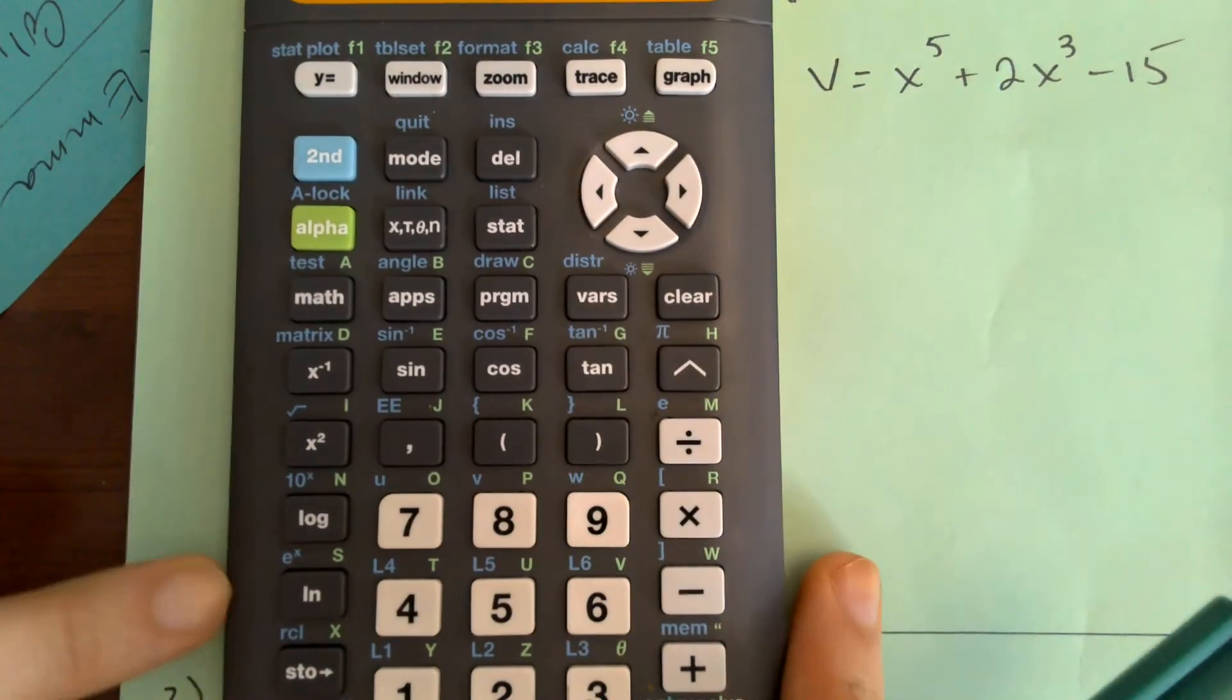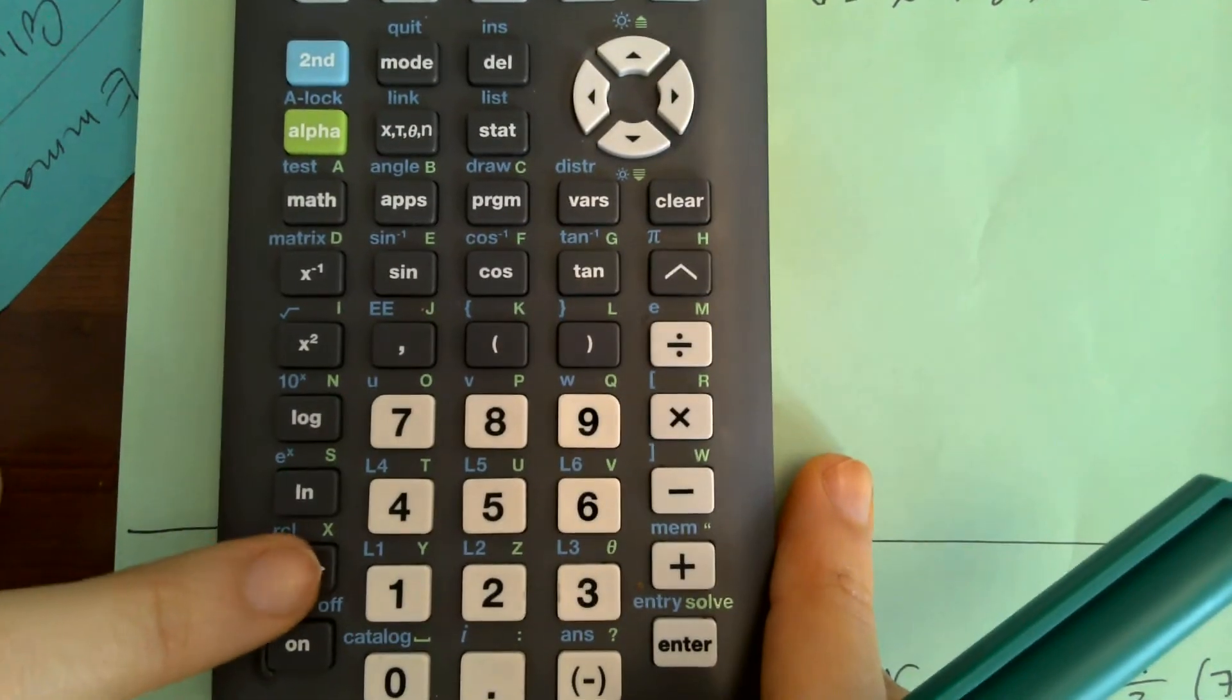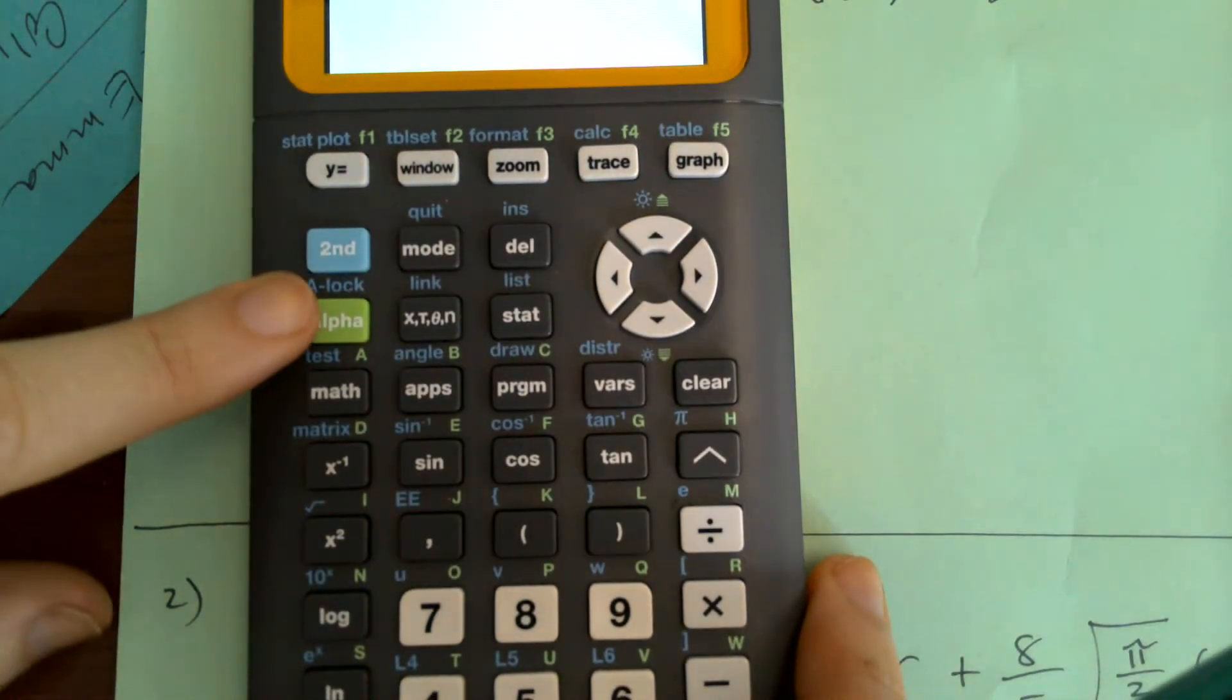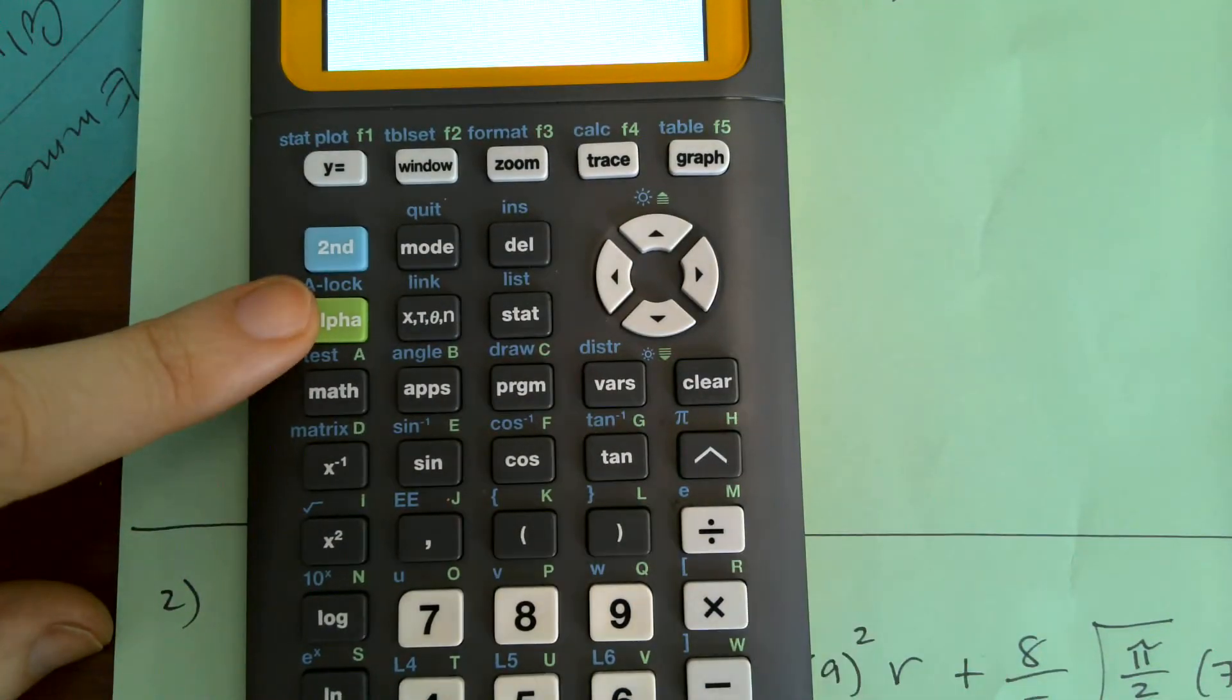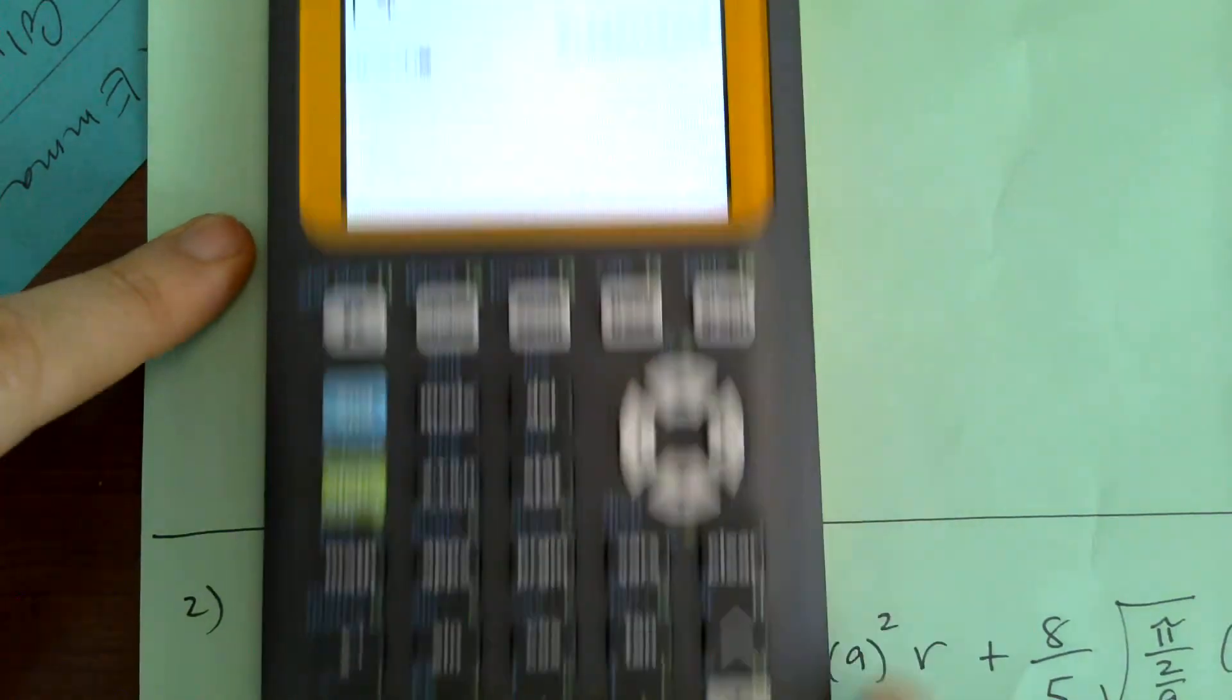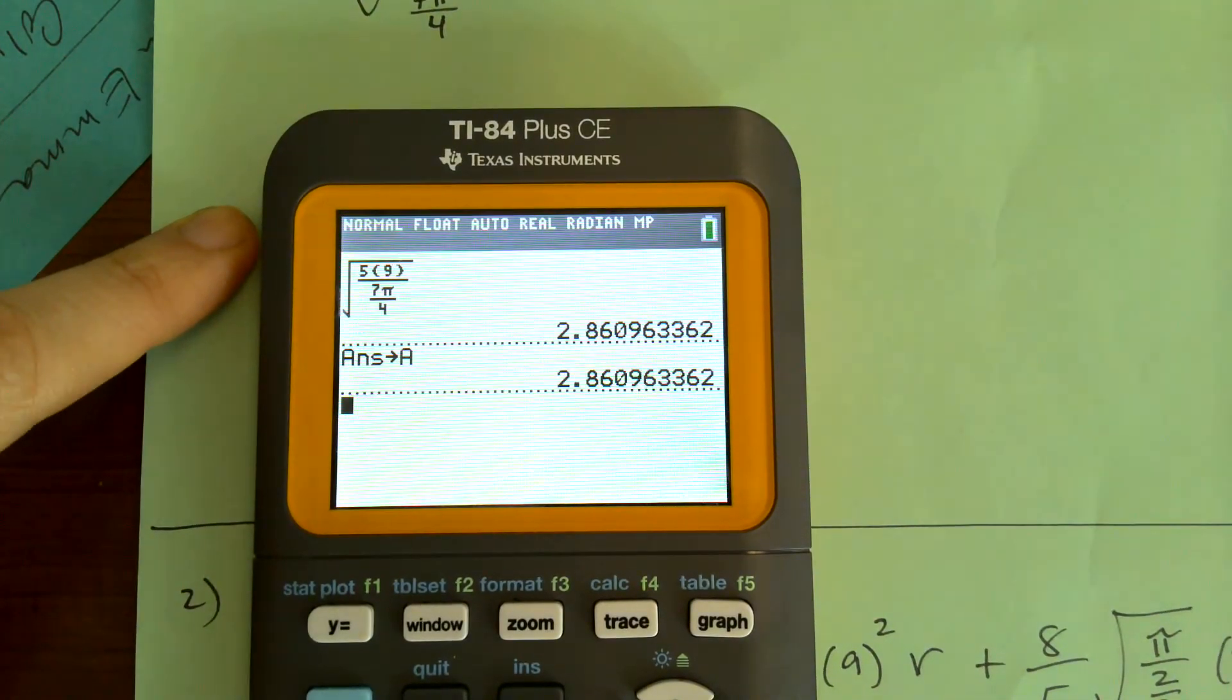So I'm going to hit this store button down here, store. I can choose any letter. To get the letters, you hit alpha, and then any key with a green letter above it. So I'll use A. So I'll go alpha, and that'll put an A in there, and then I hit enter.